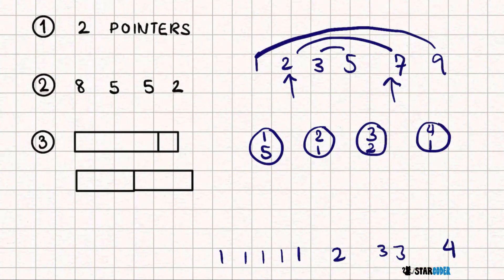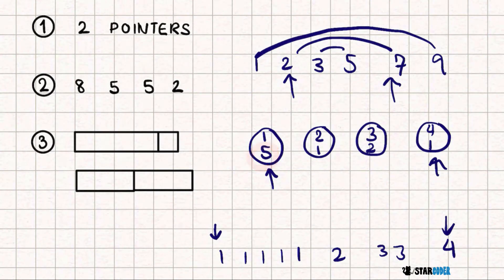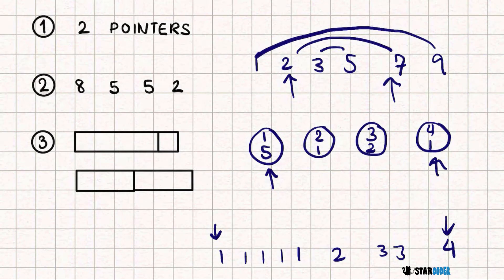What we can do is simulate two pointers on the compressed representation — one pointer on the left and one on the right, exactly the same as the simplified example. When we move a pointer, the value inside the circle acts like a counter: we must stay at that circle for a certain number of turns until we can move on to the next value.